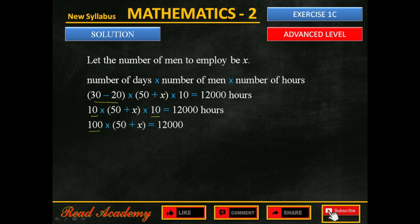Now, we need to isolate x here to find its value. First, get rid of this 100 by dividing it on both sides. 50 plus x equals 120.